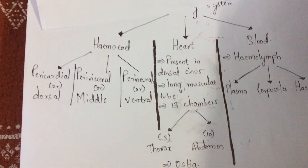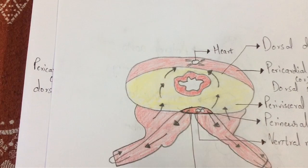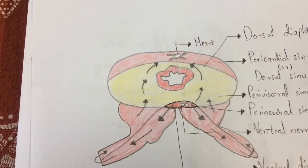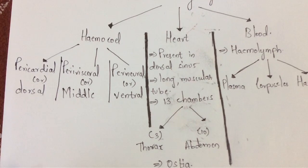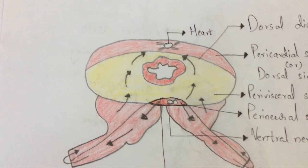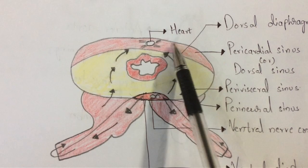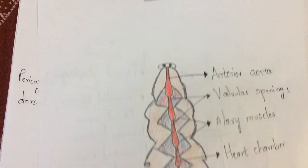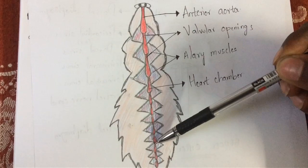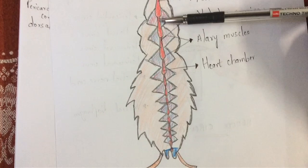As shown in the diagram, the pericardial sinus encloses the heart, and the two circles represent the nerve cord. Now, the heart of Periplaneta americana is mainly present in the dorsal sinus, that is the pericardial sinus. The heart is a long muscular tubular structure located in the dorsal sinus, also called the pericardial sinus.